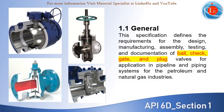API 6D specification defines the requirements for the design, manufacturing, assembly, testing, and documentation of ball valves, check valves, gate valves, and plug valves. Moreover, it applies in pipeline and piping systems for the petroleum and natural gas industries.